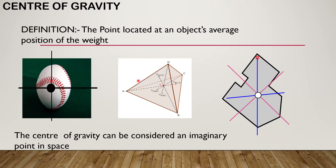For a symmetrical object, the center of gravity would be in the exact center of the object. However, for oddly shaped objects like irregular laminas, we will find the center of gravity in any number of positions depending on weight.